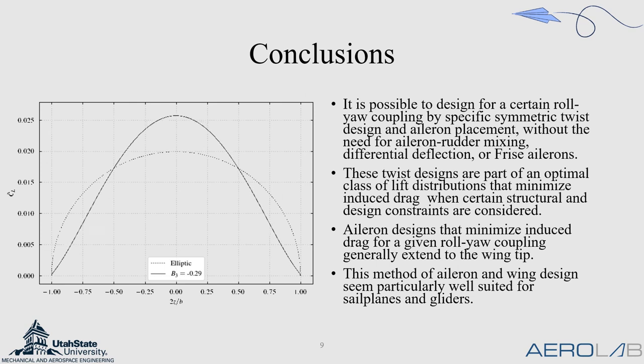The conclusions for this research show that it is possible to design for certain roll-yaw coupling when ailerons are deflected, just by using twist distributions and aileron placement. These twist distributions give an optimal class of lift distributions that will minimize induced drag when taking into account certain structural and aerodynamic constraints. We found that we typically want the aileron tip to extend to the wing tip in order to minimize induced drag. And we also note that this method is particularly well suited for sailplanes and gliders, which can take advantage of these optimal lift distributions in order to improve aerodynamic efficiency, as well as being able to overcome adverse yaw from just aileron deflection. Thank you. Are there any questions?